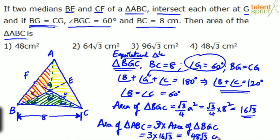48 root 3 centimeter square. Option 4. Option 4 is the correct answer. But when you solve it in the exam, try to cut down the number of steps. Keep it simple. You can just put the triangle here and visualize that BGC is an equilateral triangle - not by looking at the figure, but by seeing the given points. BG equals CG means two sides are equal, so these angles have to be equal. Each angle is 60 degrees. Equilateral triangle.